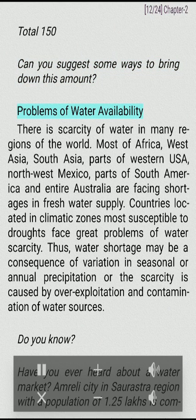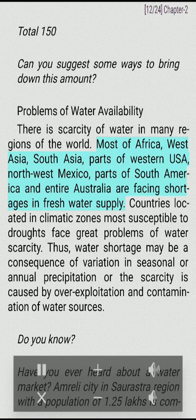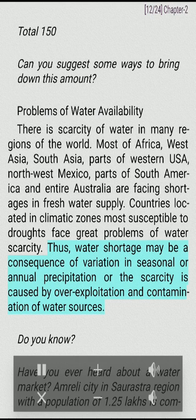Problems of water availability: There is scarcity of water in many regions of the world. Most of Africa, West Asia, South Asia, parts of Western USA, Northwest Mexico, parts of South America and entire Australia are facing shortages in fresh water supply. Countries located in climatic zones most susceptible to droughts face great problems of water scarcity. Water shortage may be a consequence of variation in seasonal or annual precipitation, or the scarcity is caused by over-exploitation and contamination of water sources.